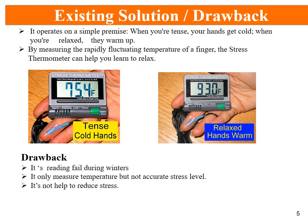In the existing solution, it operates on a simple premise: when you are tense, your hands get cold; when you are relaxed, they warm up. By measuring the rapidly fluctuating temperature of a finger, the stress thermometer can help you learn to relax. In the figure, you can see the tense cold hands versus the relaxed warm hands. The drawback of this system is that its readings fail during winters.